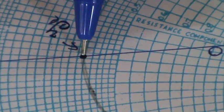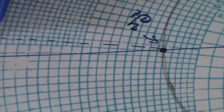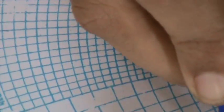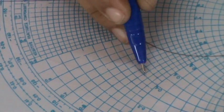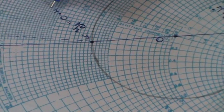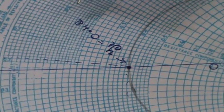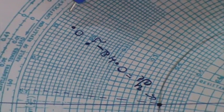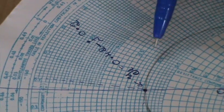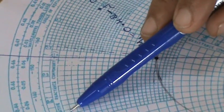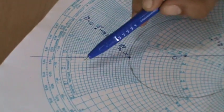Now we need to determine what is the load admittance value. So I just extend this line. I get YL as 0.42 minus j0.2, 0.42 minus j0.2 because it is a negative reactance component.